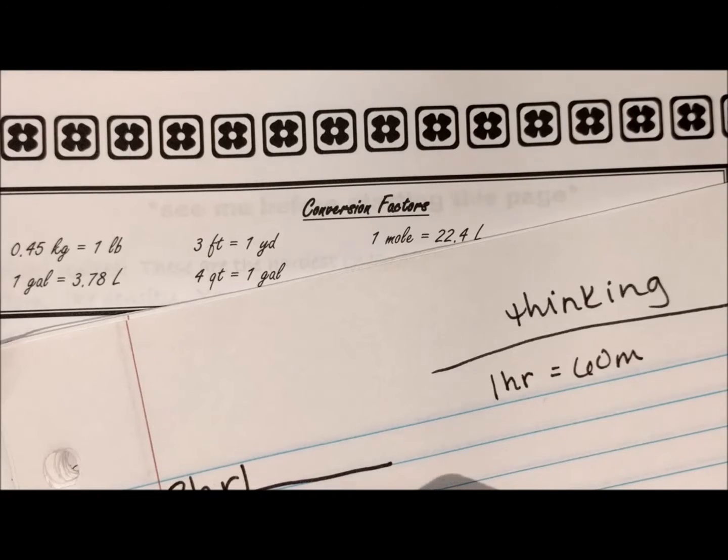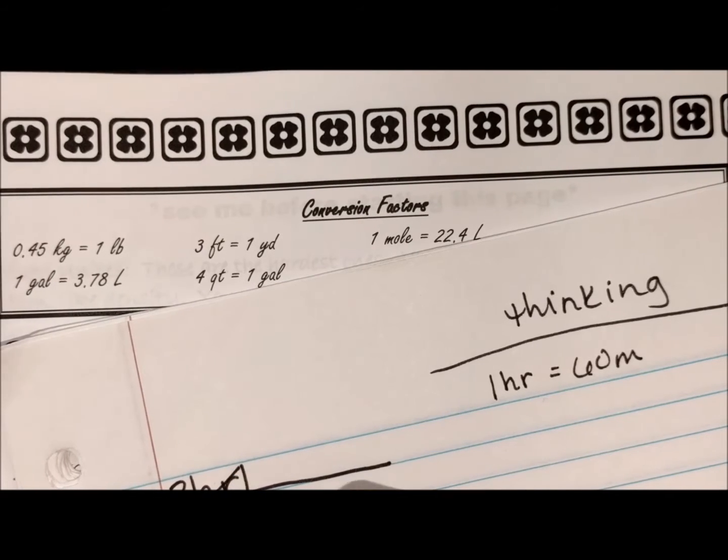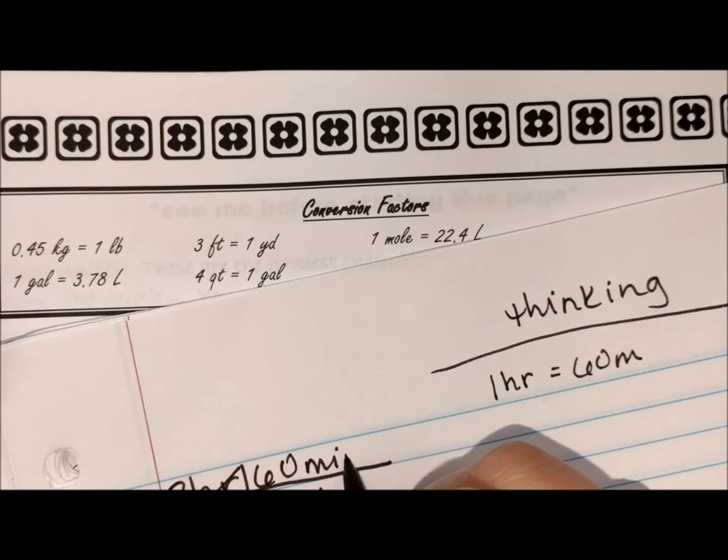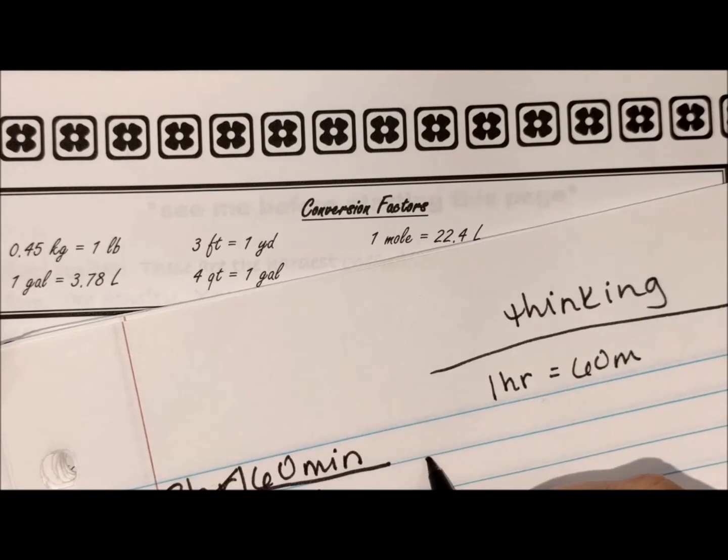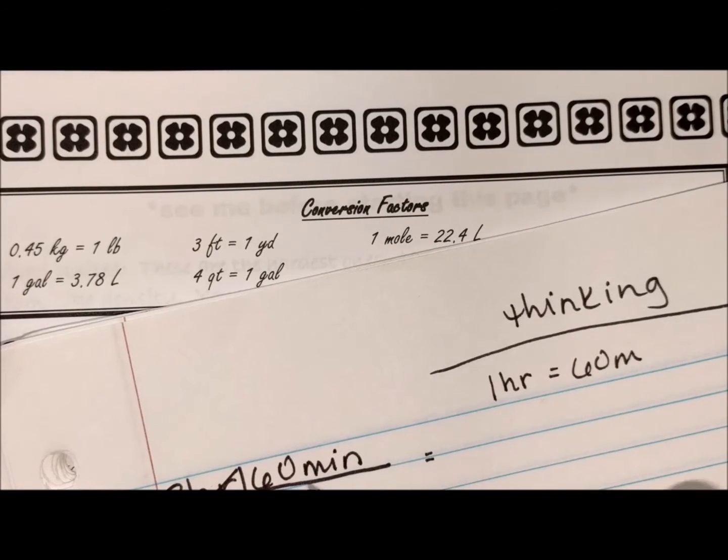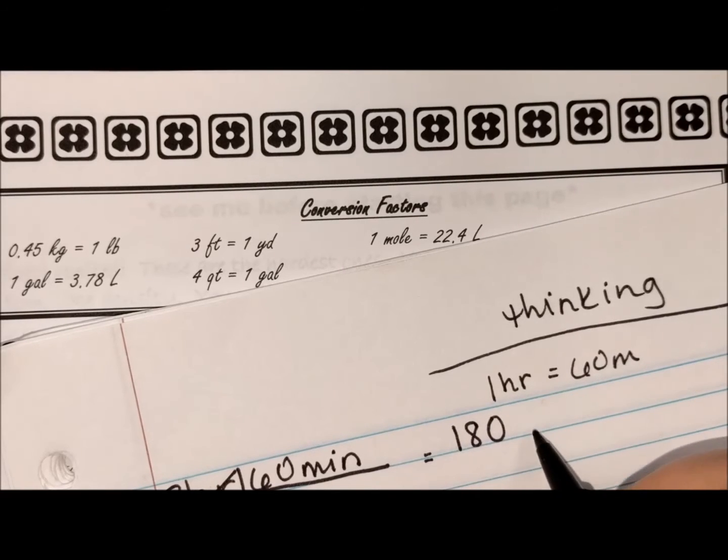So the hour is going to go on the bottom so these cancel out. The 60 minutes goes on top. So the answer would be three times 60, which is 180 minutes.